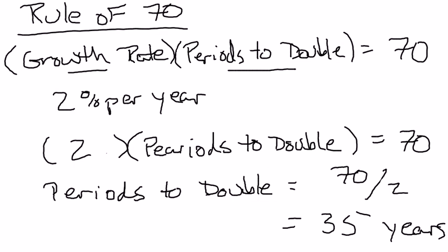Well some of you will say, hey, what happens if you have a negative growth rate? Well if that's the case, then the rule of 70 doesn't give you the period to double, it gives you the period to half.